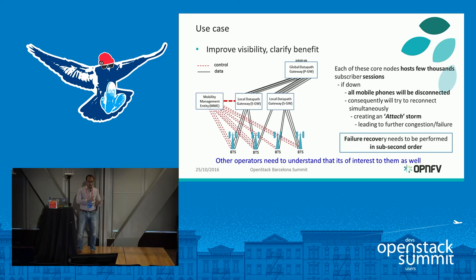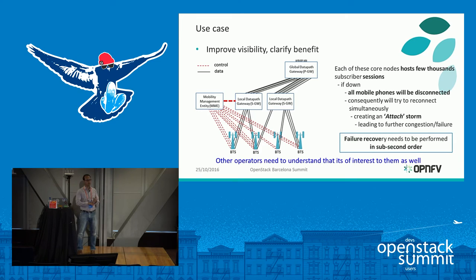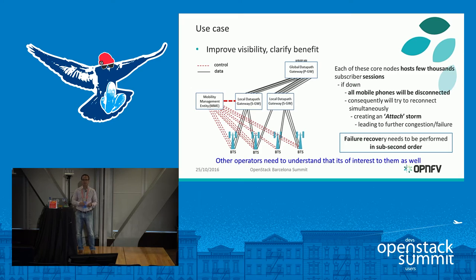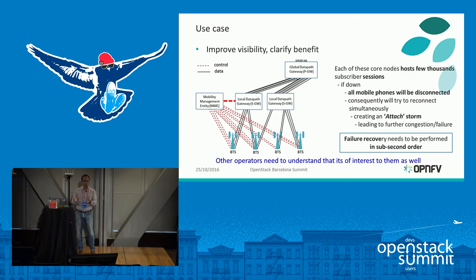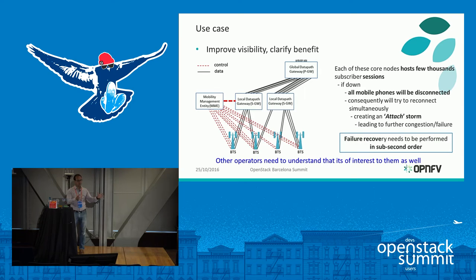They understand the necessity of solving this. Each of these nodes is hosting a few hundred thousand subscriber sessions, so if one goes down, a few hundred thousand mobile phones lose their connection and try to reconnect instantly, creating congestion no one can handle. Going down is still manageable, but you cannot recover the node. As soon as you explain this problem to someone from a mobile operator, they instantly understand.